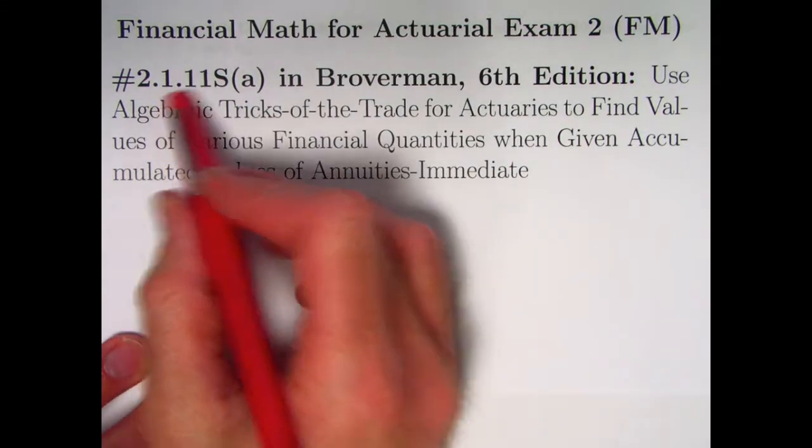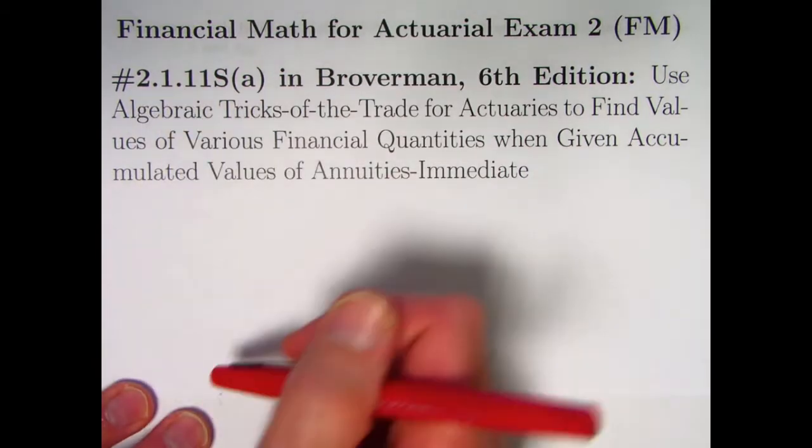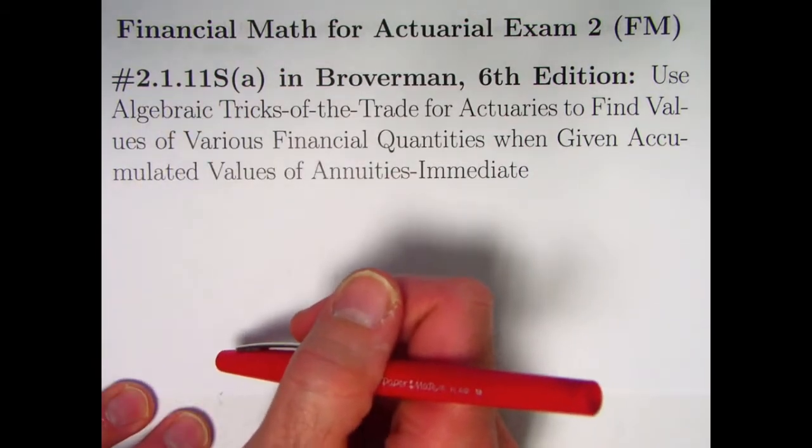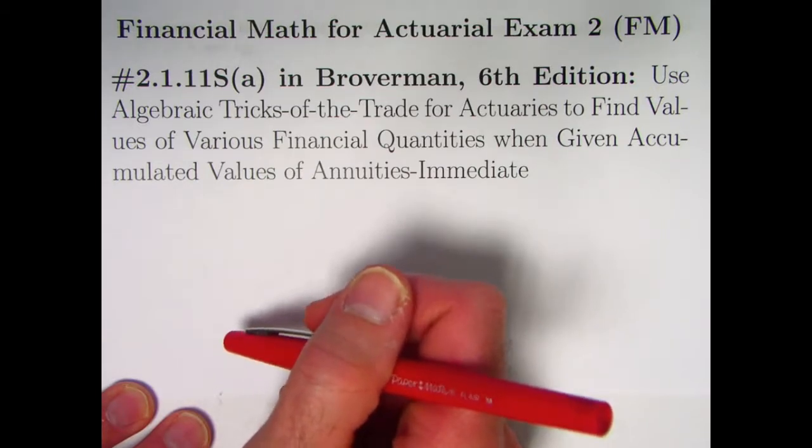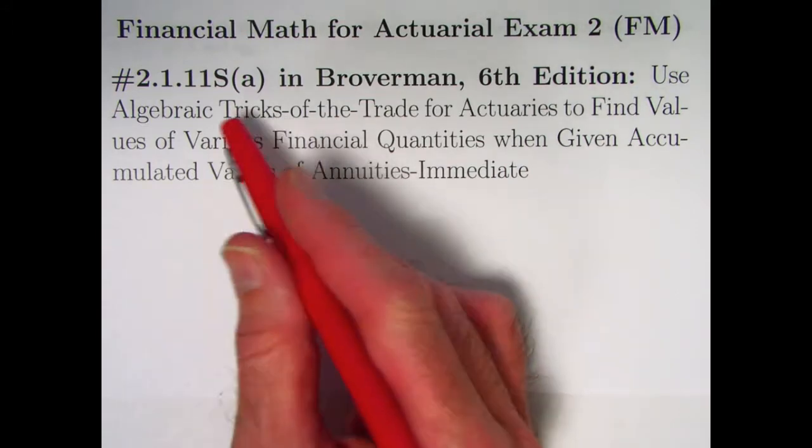Hi, in this video we're going to be taking a look at part a of problem 2.1.11. Use algebraic tricks of the trade for actuaries to find values of various financial quantities given accumulated values of annuities immediate. That's a mouthful.